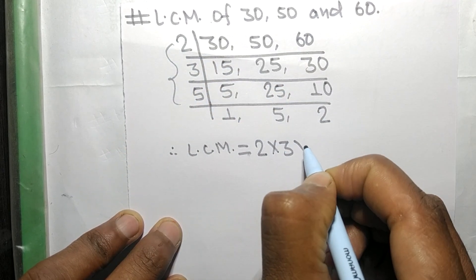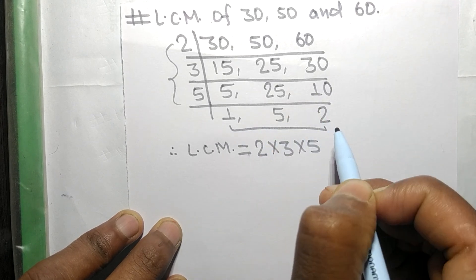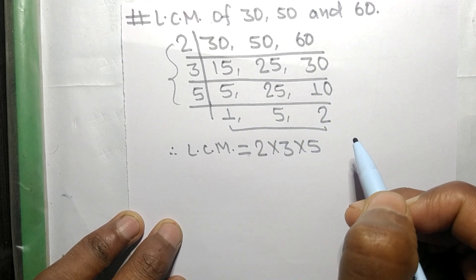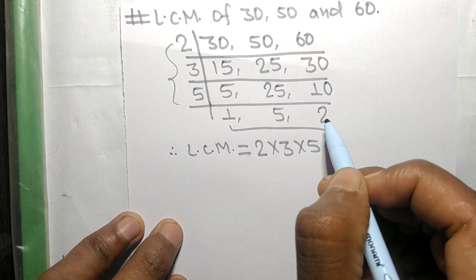And from this side we choose the numbers greater than 1, that is 5 and 2, so multiplied by 5 and 2.